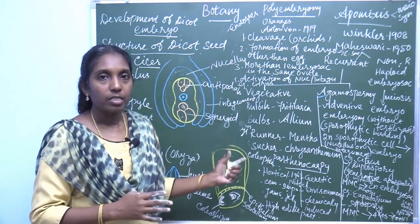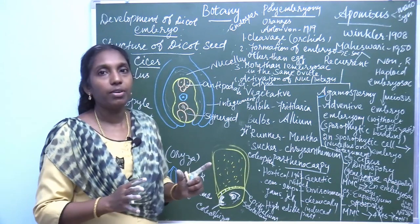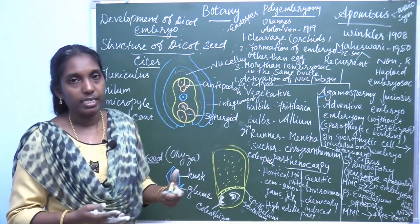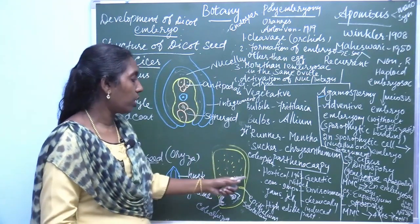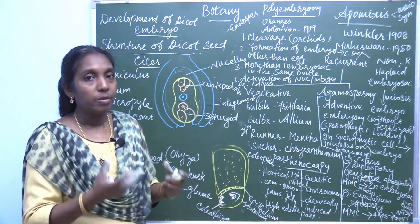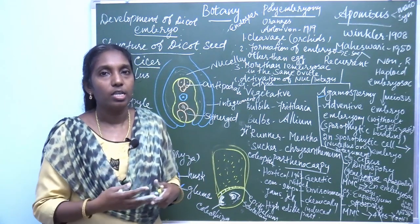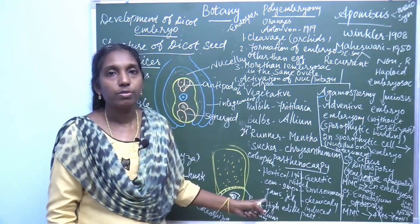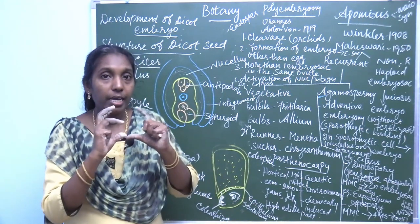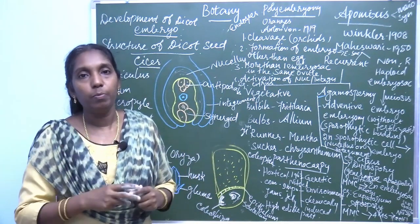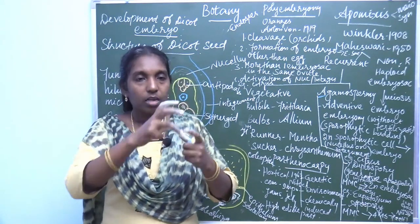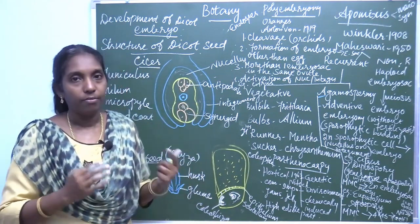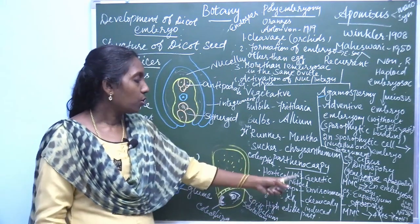Parthenocarpy fruits are significant and used by horticulturists. They improve commercial value, and seedless fruits are very useful for preparing jams, jellies, and drinks. Parthenocarpy also increases the high content of edible part — when no seed is present, the area that would have been occupied by the seed is instead covered by the edible part of the fruit.